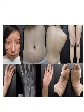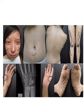Poikiloderma over the lower limbs, hypoplastic thumbs of both hands, absent carpal bones, radial ray defect, as well as hyperkeratotic lesions over the plantar aspect of both feet are also visible.